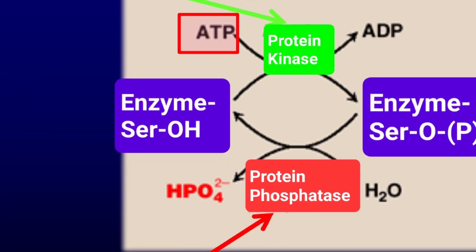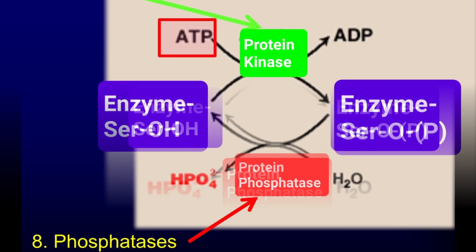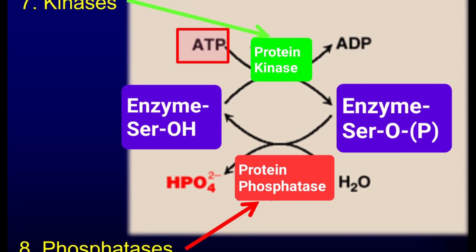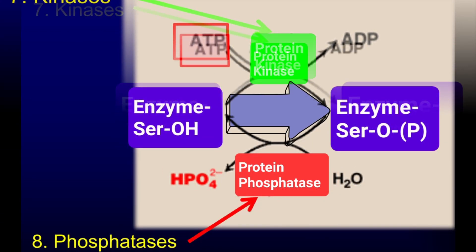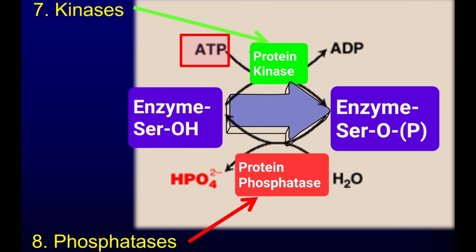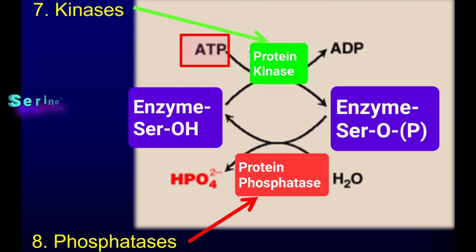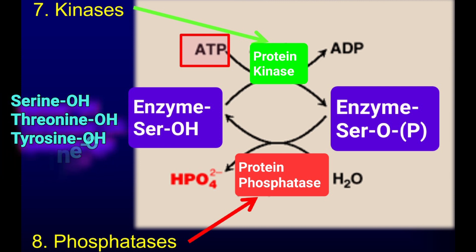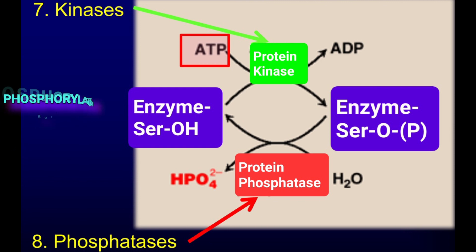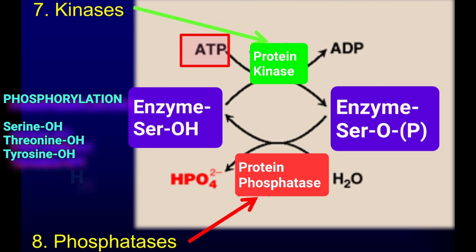Covalent modification of enzymes is an important regulatory mechanism. This involves the creation or removal of a covalent bond, typically at residues that have hydroxyl groups like serine, threonine, or tyrosine. The most common form of covalent modification is phosphorylation, which involves adding a phosphate group to hydroxyl residues in the primary structure of enzymes.